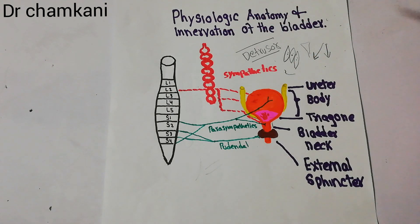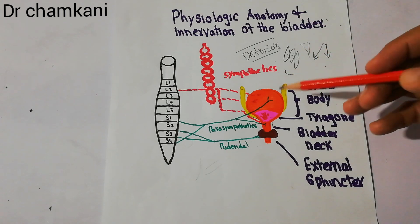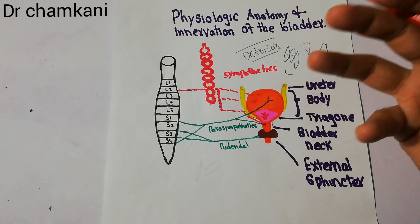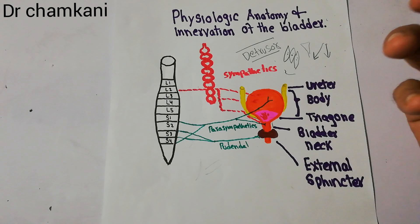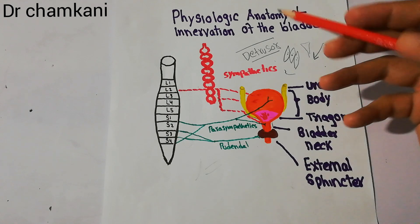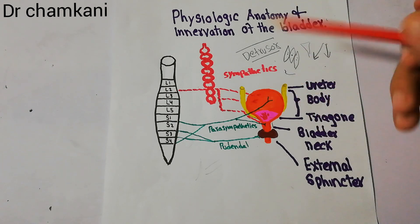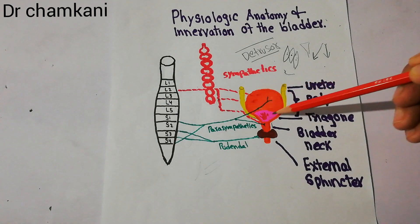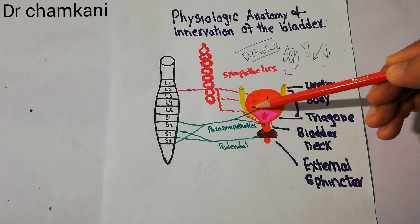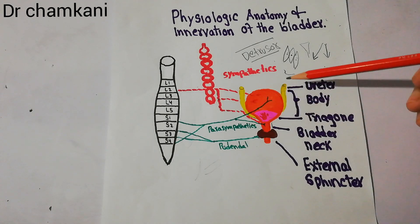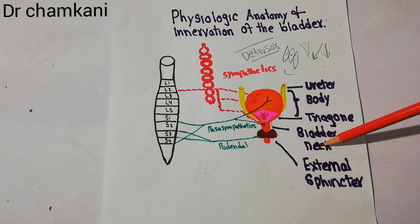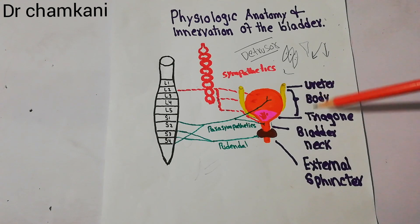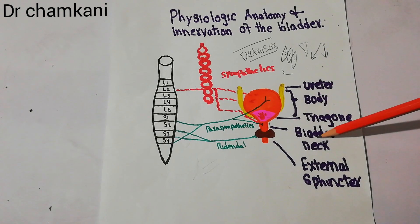The urinary bladder is basically a chamber of smooth muscles which contains urine, and it has two main parts. The first is the body of the bladder, which is made of smooth muscles called the detrusor muscles, and the second is the neck. So its two main parts are the body of the bladder and the neck of the bladder.